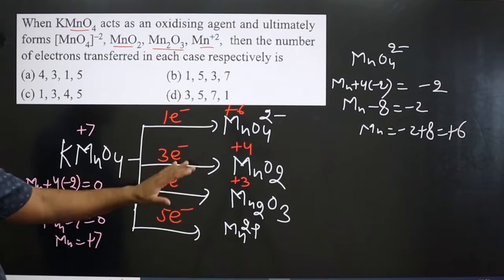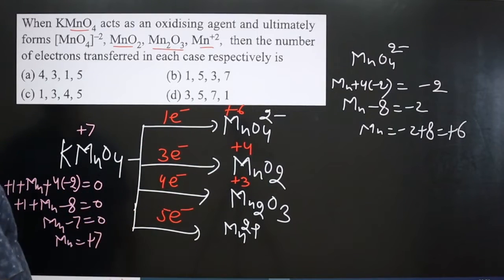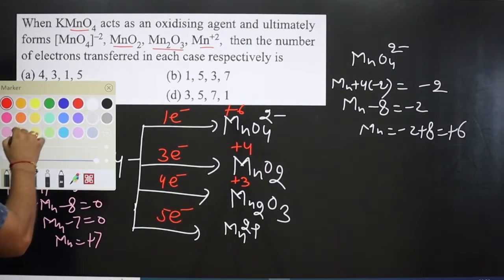So in all these cases we calculated the transfer of electrons: 1, 3, 4, 5. We got the C option: 1, 3, 4, 5.